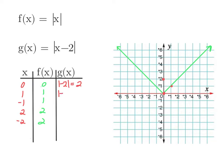Now we have to subtract 2 before we take the absolute value, and we'll get 1 again — same spot. For negative 1, when x is negative 1, the absolute value of negative 1 is 1. But now for g of x, we have to subtract 2 first, then take the absolute value. So now x is negative 1 and the y-coordinate is 3. What used to be 2, 2 — absolute value of 2 is 2. Now we have to subtract 2 first, then take the absolute value, so that puts us at 0. What was negative 2 — absolute value is 2 — now we subtract 2 first, then take the absolute value, and now we're up at 2, 4.